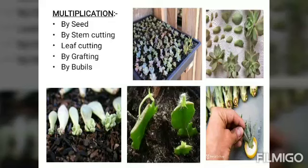The last method is multiplication by bulbils. Plants like Agave vivipara and Kalanchoe produce bulbils, which when mature and separated from the mother plant are capable of establishing themselves into a new plant under proper conditions. An example picture shows bulbils already removed from the mother plant and planted in a new pot.